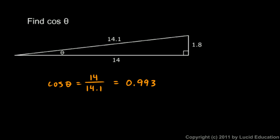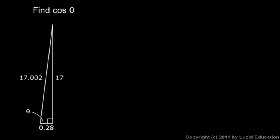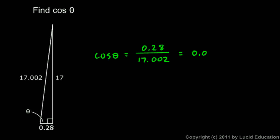In this triangle, the right angle is at the bottom, theta is the angle shown, and the sides are 0.28, 17, and 17.002. We're asked to find the cosine of theta, and it should be something close to 0 because this side length is really small compared to the hypotenuse. Cosine of theta equals the adjacent side divided by the hypotenuse: 0.28 divided by 17.002, which comes out to 0.016 — and that is indeed close to 0.